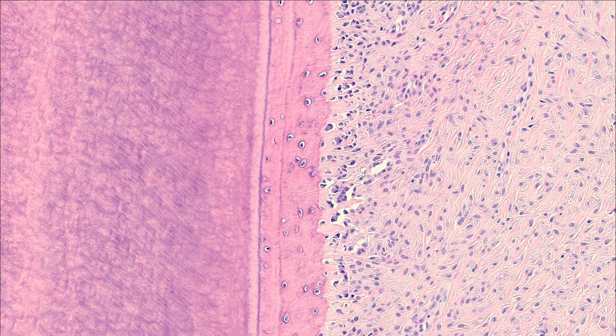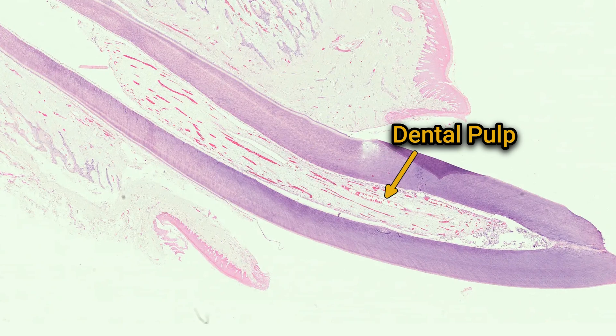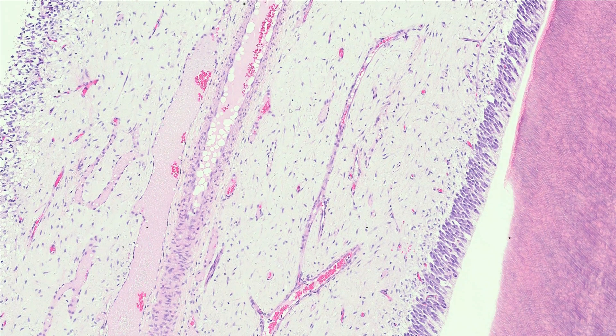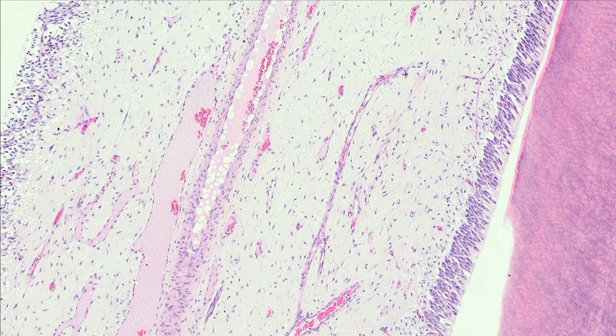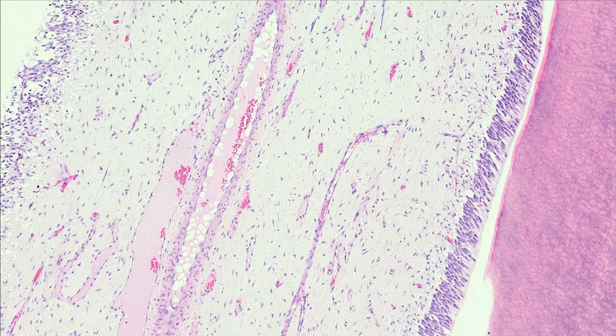Underneath all these layers of hard tissue, at the center of the root and the crown, there is the dental pulp. The pulp fills a central space called the pulp chamber in the crown and it extends down into the root canal. It's a delicate, soft connective tissue resembling primitive mesenchyme, packed with stellate fibroblasts, blood vessels, and lots of sensory nerve fibers. Blood vessels and nerves enter and exit the tooth through a little opening at the very tip of the root, called the apical foramen.